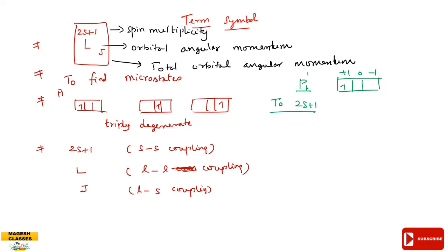First, we find the spin multiplicity 2S+1. For one electron, S equals one-half. So 2S+1 equals 2 into one-half plus 1, which equals 2. The spin multiplicity is 2.